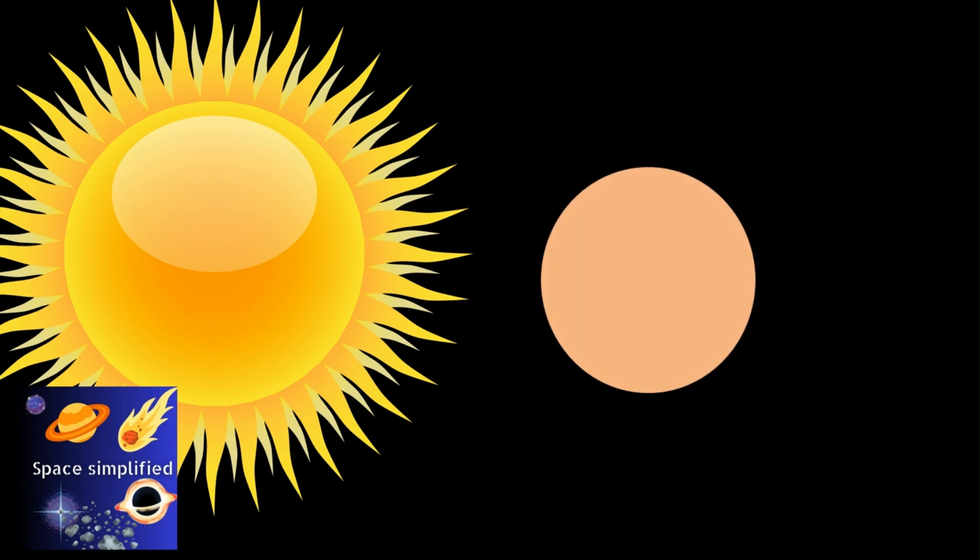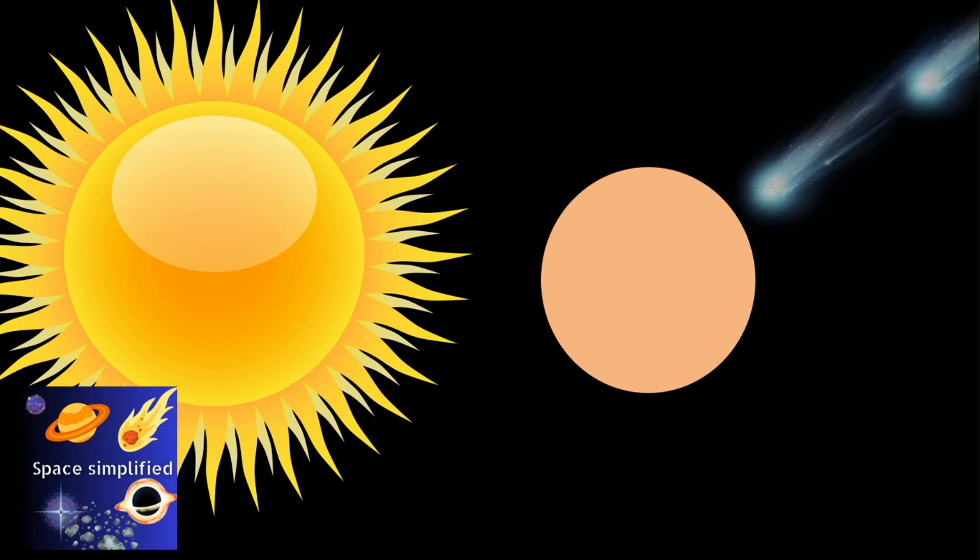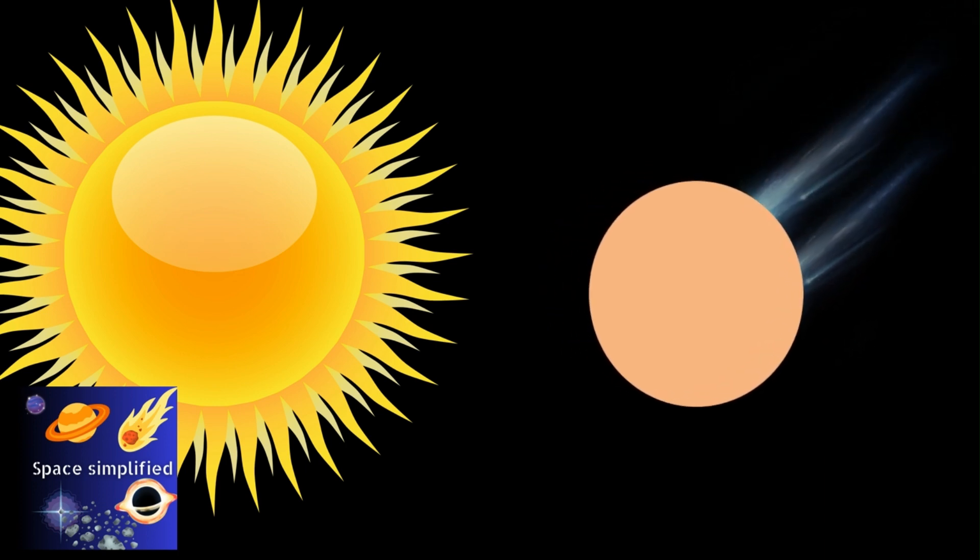These planetesimals can attract protoplanets and other particles to grow bigger, such as comets, meteoroids, or even asteroids. In fact, this is how Earth gained water.